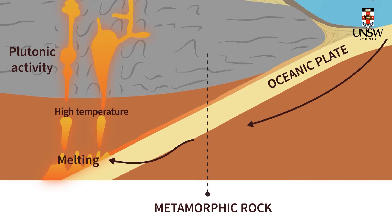The most common settings where metamorphism occurs are at a contact or local setting, where the changes to the rock are caused predominantly by heat, and in a regional scale setting, where the changes to the rock are caused by both heat and pressure.